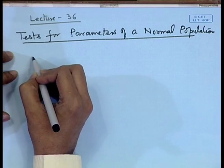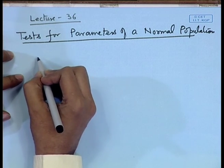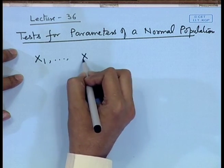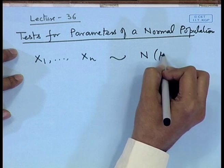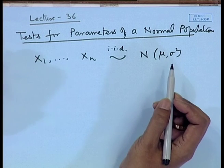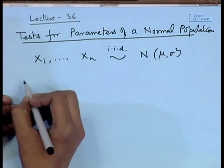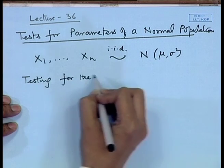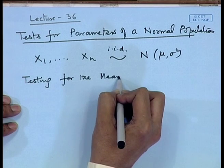Let me begin with the test for the parameters of the normal distribution, where the testing problem may be composite. Let us take the case of testing for the mean. Consider the situation: x₁, x₂, ..., xₙ following Normal(μ, σ²). So we have a random sample from a normal distribution with parameters μ and σ². We may be testing for the mean μ.